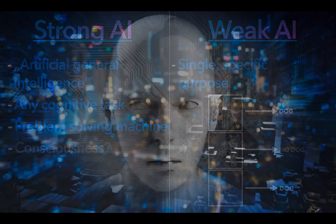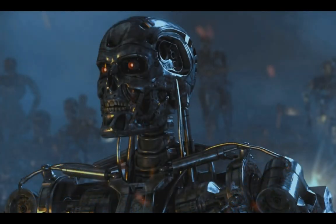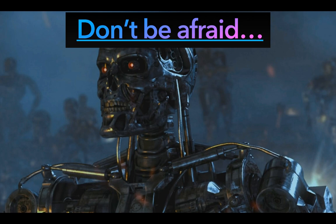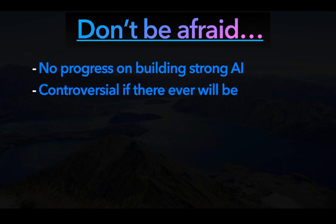When we talk about artificial intelligence in the future, many people tend to think about what science fiction movies show: a nearly almighty robot AI that becomes an evil, humanity-oppressing dictator of the whole world. And while this is great for making thrilling movies, we are nowhere near that right now. At the current state of research, there is no real progress on building a strong AI — which would be necessary for this scenario — and it is controversial whether there ever will be a strong AI. So we can worry about this when research gets closer to actually developing strong AI, but right now there are other, more real dangers to think about.